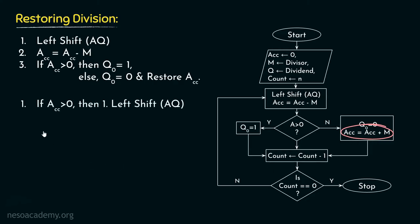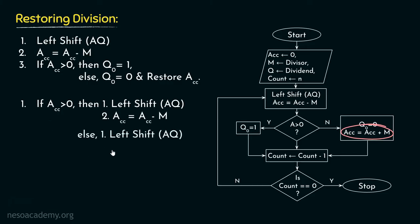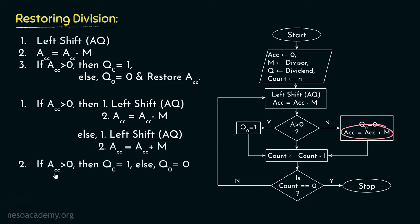So basically, at the first step, if the content of the accumulator register is greater than zero — that means if the accumulator includes a positive value — in that case, we are going to perform a left shift of AQ first, and thereafter we will perform the subtraction. However, if it is negative, in that case we will perform the left shift of AQ as well, but this time instead of performing the subtraction, we will be performing the addition. Either way, after we perform the subtraction or the addition, we are going to check the content of the accumulator register once again.